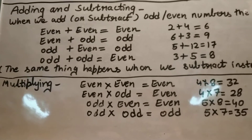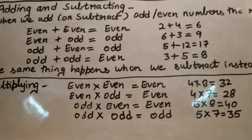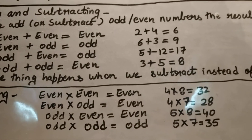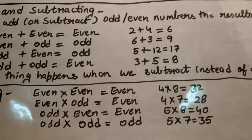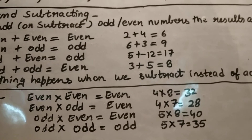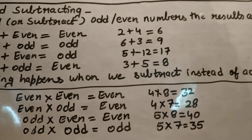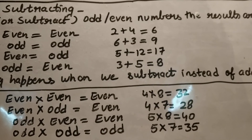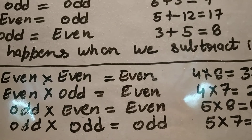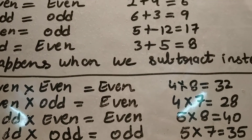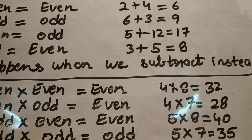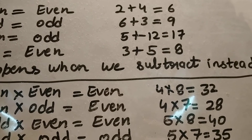Now for multiplication: even multiplied by even gives even. Four and eight are both even; four times eight is thirty-two, and checking the last digit — two — confirms thirty-two is even. Even multiplied by odd also gives even: four times seven is twenty-eight; checking the ones place, eight is even, and twenty-eight is exactly divisible by two.